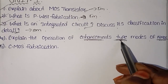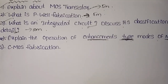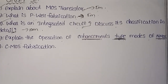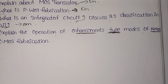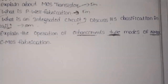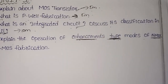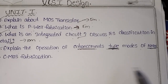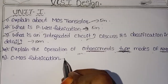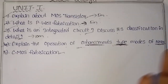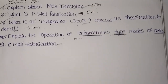Two types will be used in NMOS. For theory and diagrammatic questions, focus on the diagrammatic question. If you choose a diagrammatic question, it covers Enhancement Type and is worth 10 marks. The main important question is CMOS Fabrication, which has two types: P-well and N-well. P-well is 5 marks; if you choose the first diagrammatic it is 5 marks, and the second diagrammatic is 10 marks.